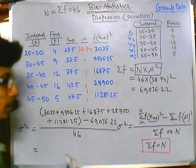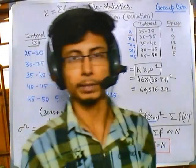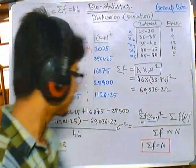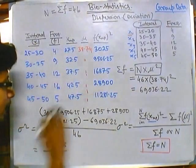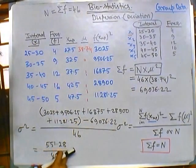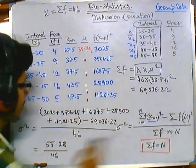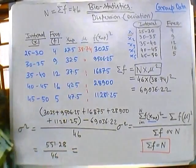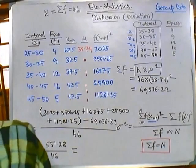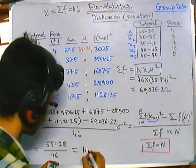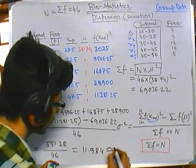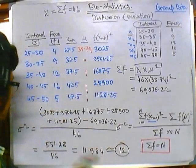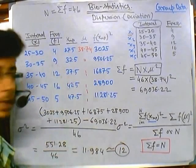After adding all f×xmp² values and subtracting the N×mu² term, we get 551.28. Dividing by N = 46 gives sigma squared = 11.984, approximately 12. So the dispersion value for this grouped frequency data set is 12.